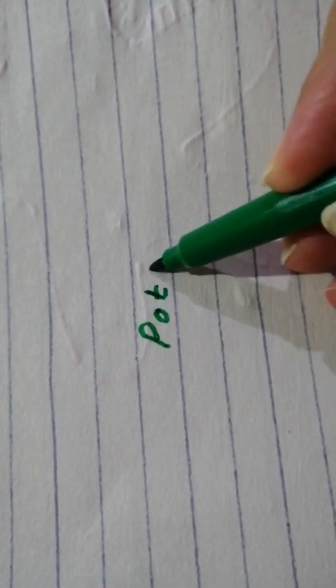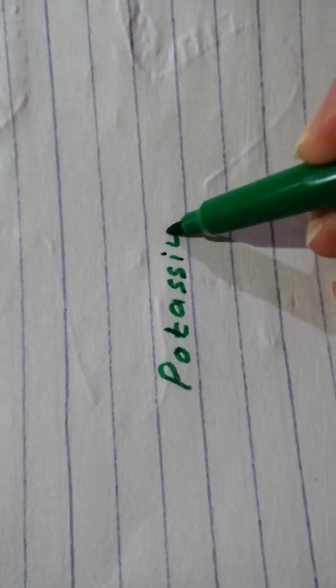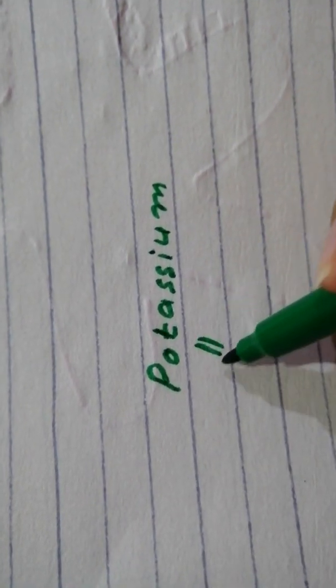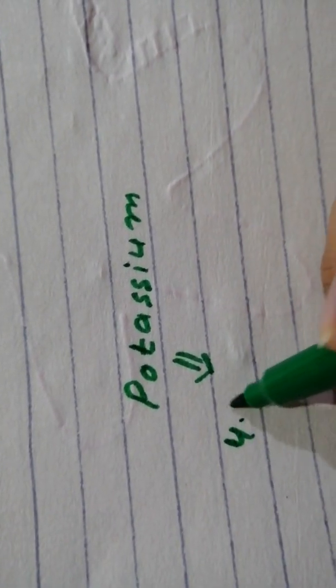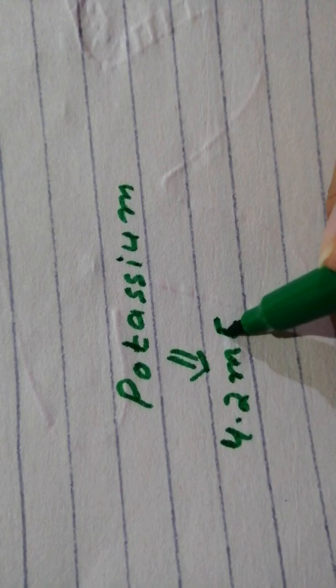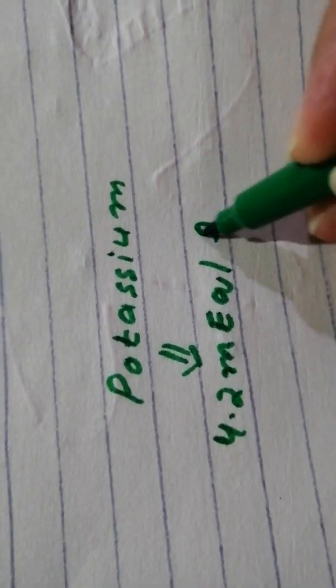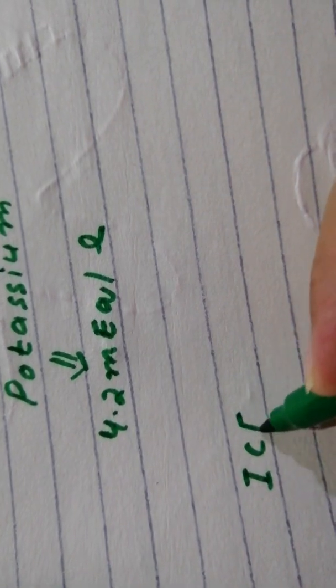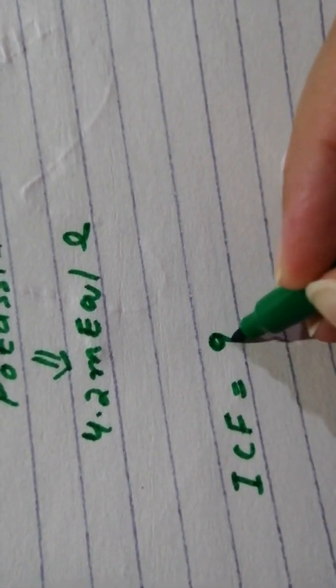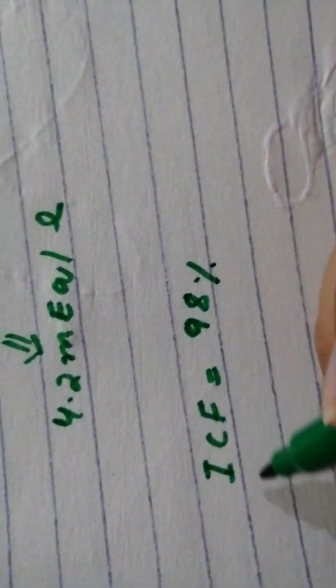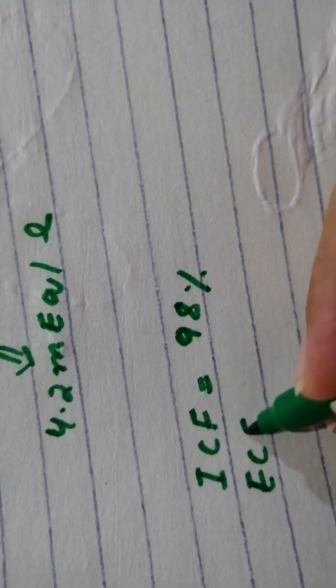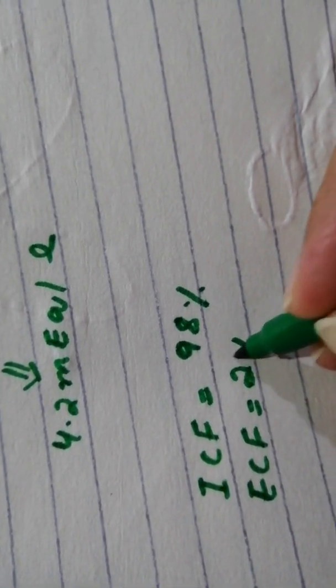Hello everyone, let's talk about the renal regulation of potassium. In the ECF, potassium concentration is about 4.2 milliequivalents per liter. Interestingly, 98% of body's potassium is in the ICF, with only 2% in the ECF.